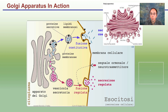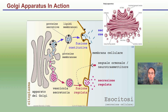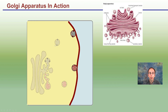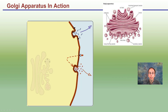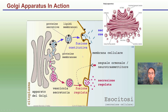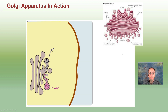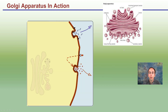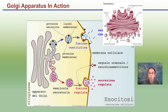The Golgi apparatus in action shows the budding off and exiting out of the cell, with a receiving end where membrane binding is occurring. There are many different end results, but the same basic process: vesicles bud off and are formed for transportation.